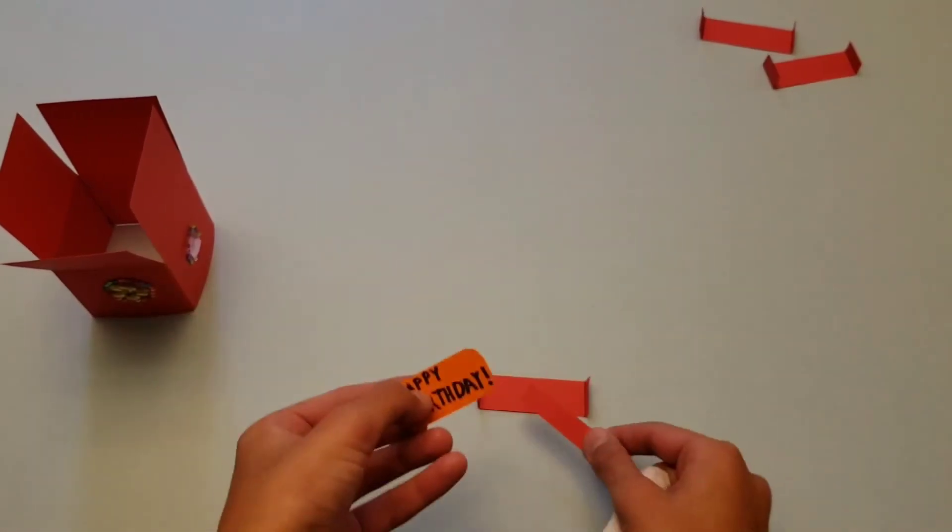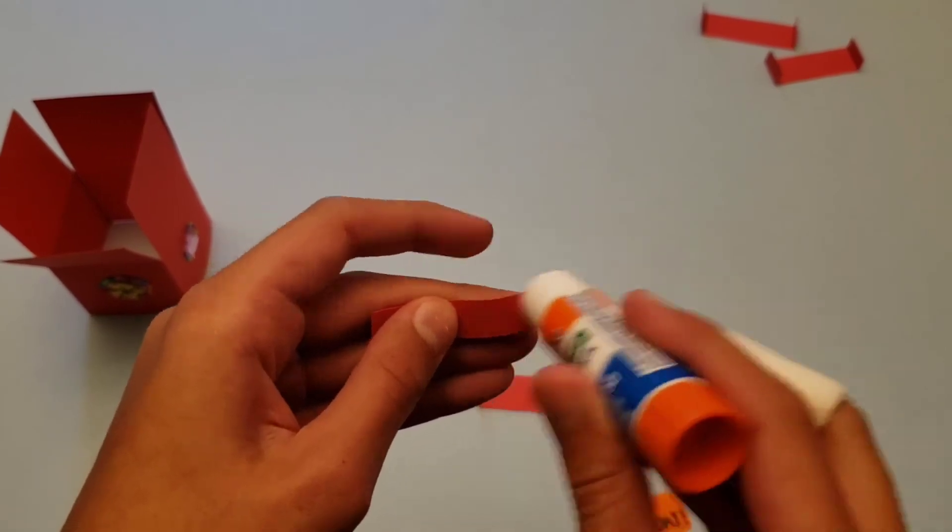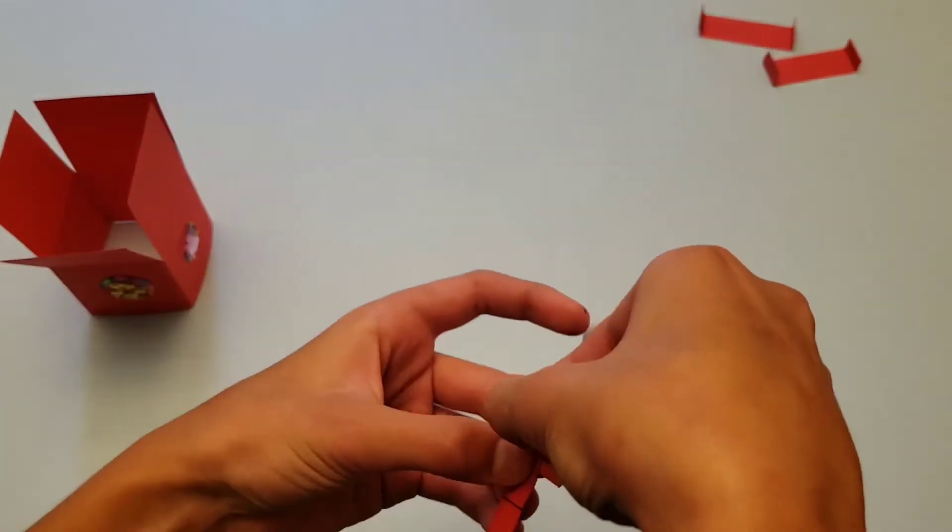Now make a message such as happy birthday, or something short, and take another smaller strip of paper, and glue it on the back of the message.